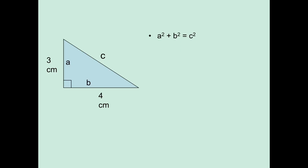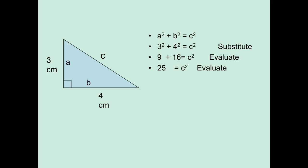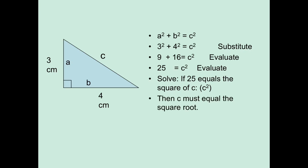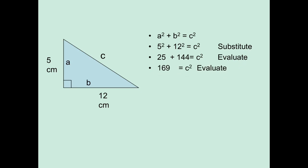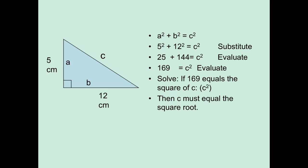Let's look at one of the basic Pythagorean triplets, where legs A and B are 3 and 4. You start with the formula, substitute in the numbers, evaluate: 3 squared equals 9, 4 squared equals 16, add those, you get 25. If 25 equals C squared, then C must be the square root of 25, which is a perfect square root — and that's 5. Another example: legs A and B being 5 and 12. A squared plus B squared equals C squared. Substitute in 5 and 12, evaluate to get 25 and 144, add those together. If 169 equals the square of C, then C must be the square root of 169, which is on your list — and that's 13.